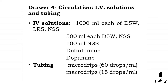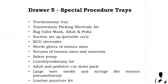Drawer 5 contains special procedure trays including: a tracheostomy tray, transvenous pacing electrode kit, bag-valve mask for adult and pediatric, suction setup, portable cart, ECG electrodes, sterile gloves of various sizes, sutures of various sizes and materials, Salem sump, cricothyroidotomy kit for adult and pediatric, cut-down pack, large bone needle and syringe for tension pneumothorax, and a lumbar puncture kit.